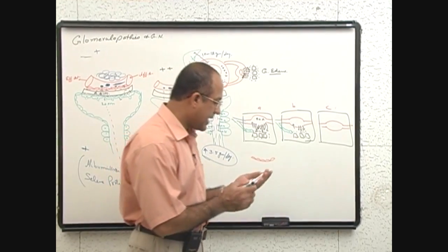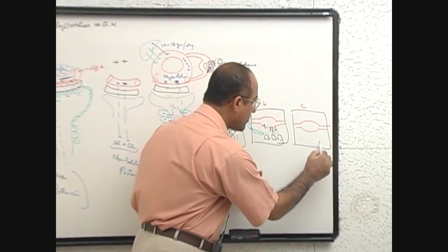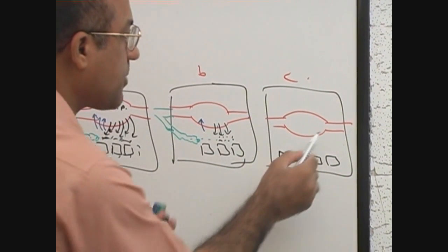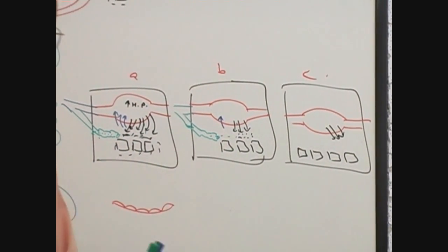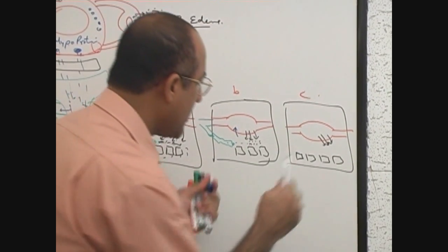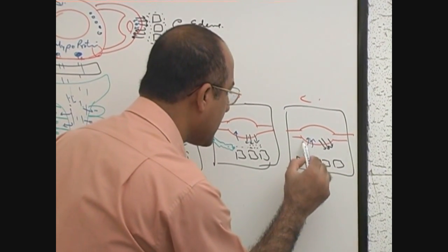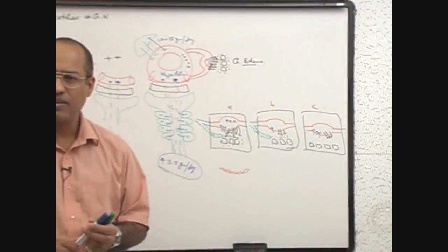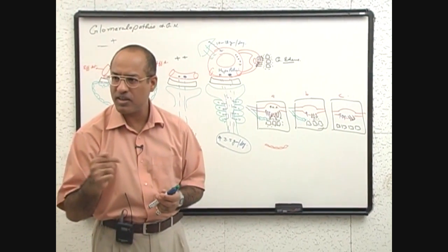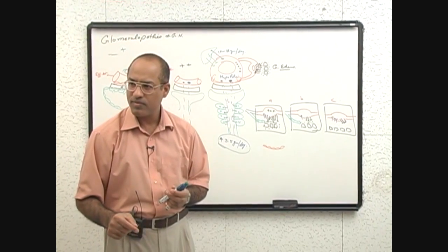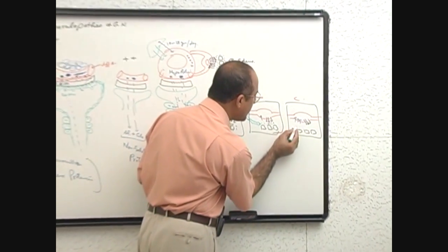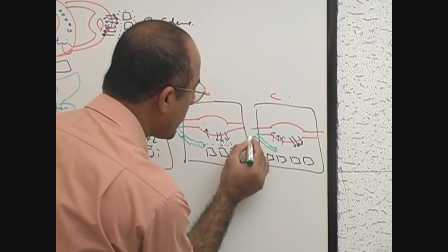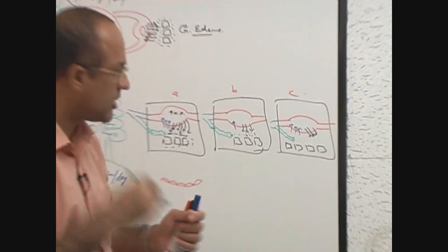Now we come to the third patient. In the third patient, hydrostatic pressure is normal. Even oncotic pressures are normal. Do you think patient can develop the edema now? Can patient develop by some mechanism edema now? Yes. That is by blockage of lymphatics. Lymphatics eventually drain into venous system here.